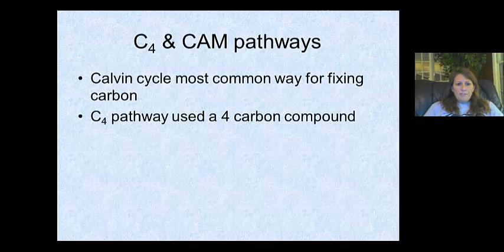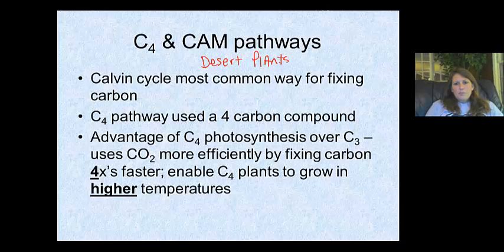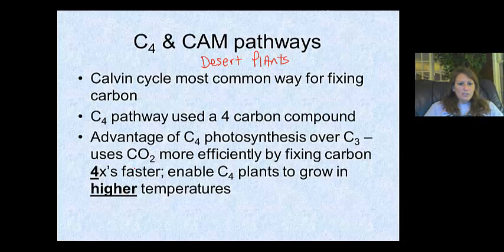Now for C3 plants — we mentioned earlier that plants in higher temperatures, like desert plants, have special pathways called C4 and CAM. CAM stands for Crassulacean Acid Metabolism. Compared to C3, C4 plants have just one additional carbon, so they can go through carbon fixation faster. This allows them to grow in higher temperatures, and there will be a test question about the advantage of having a C4 over a C3 plant.